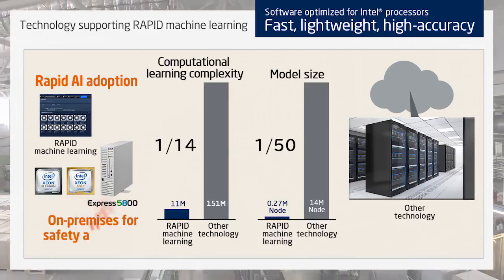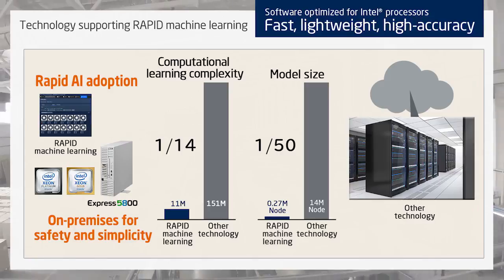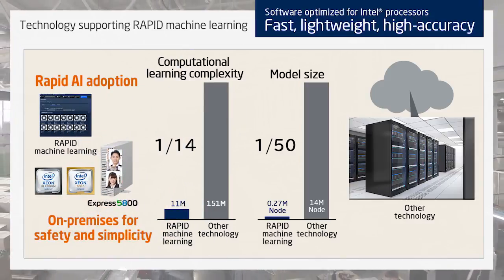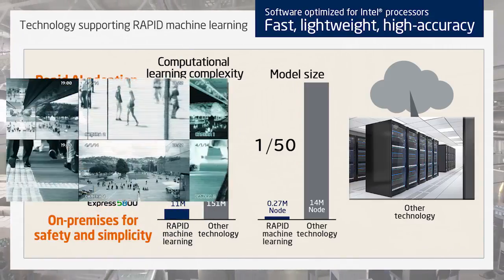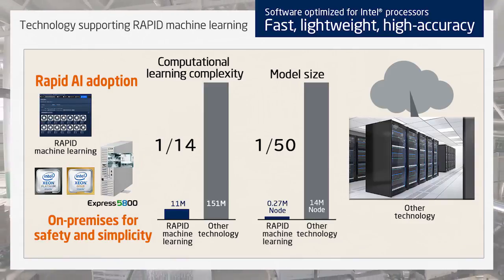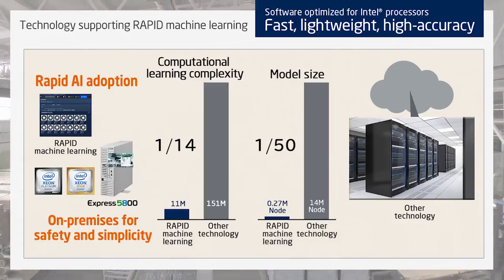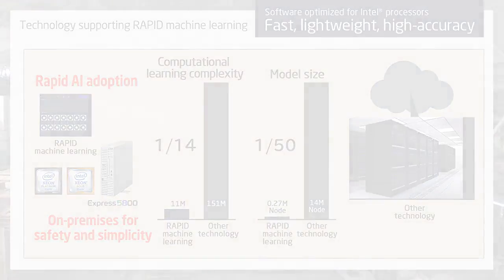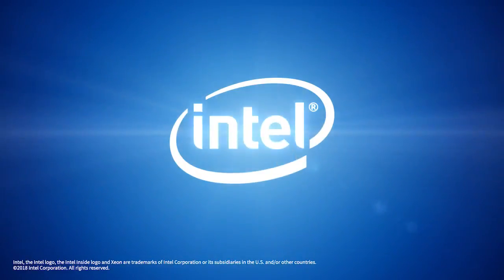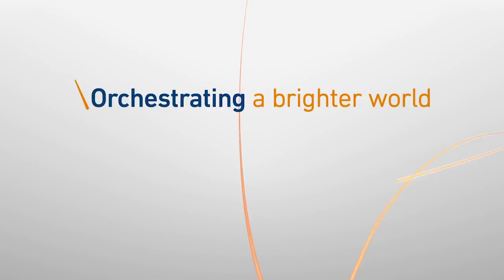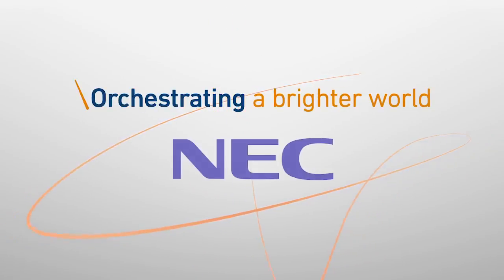On-premises usability allows safe and simple handling of personal information, like photos of faces or high-volume videos and sensor data, without going through the cloud. Orchestrating a brighter world. NEC.